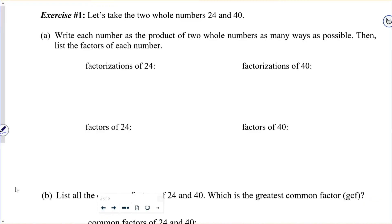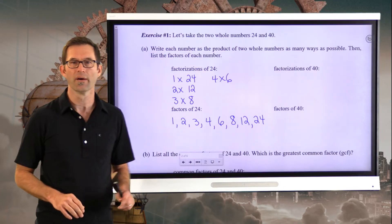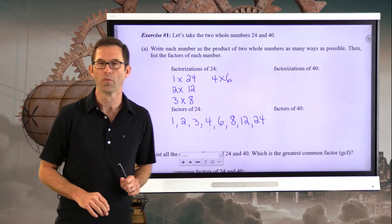Well, maybe the easiest factorization of 24 is 1 times 24. But then we'll also have 2 times 12, 3 times 8, and 4 times 6. This gives us factors of 1, 2, 3, 4, 6, 8, 12, and 24.